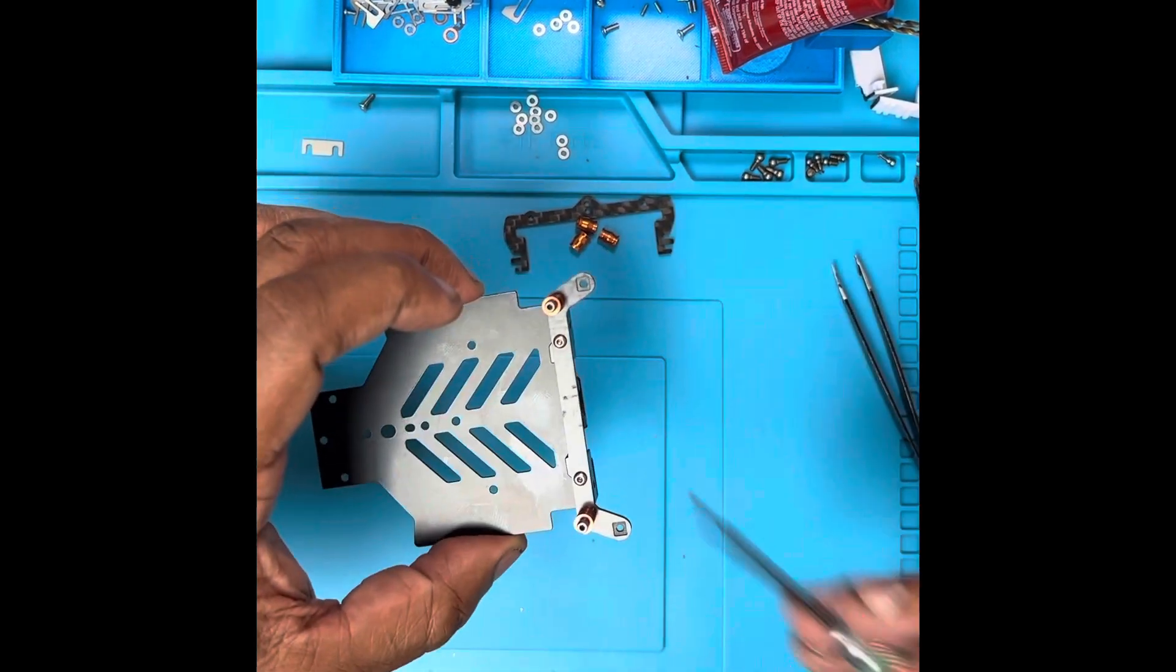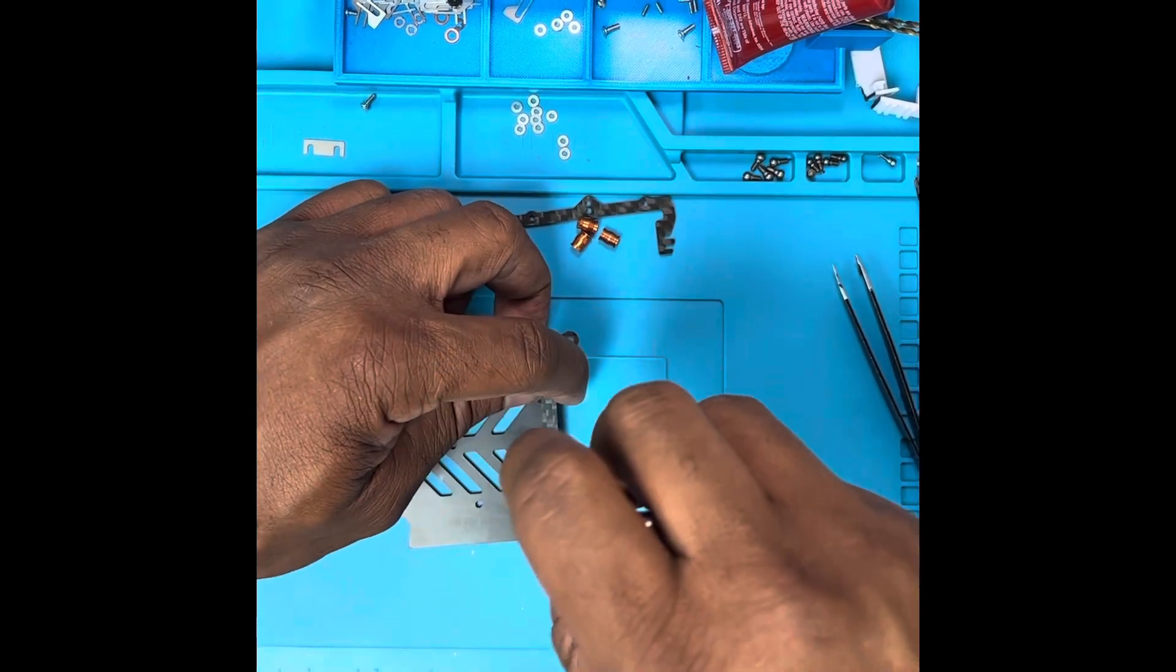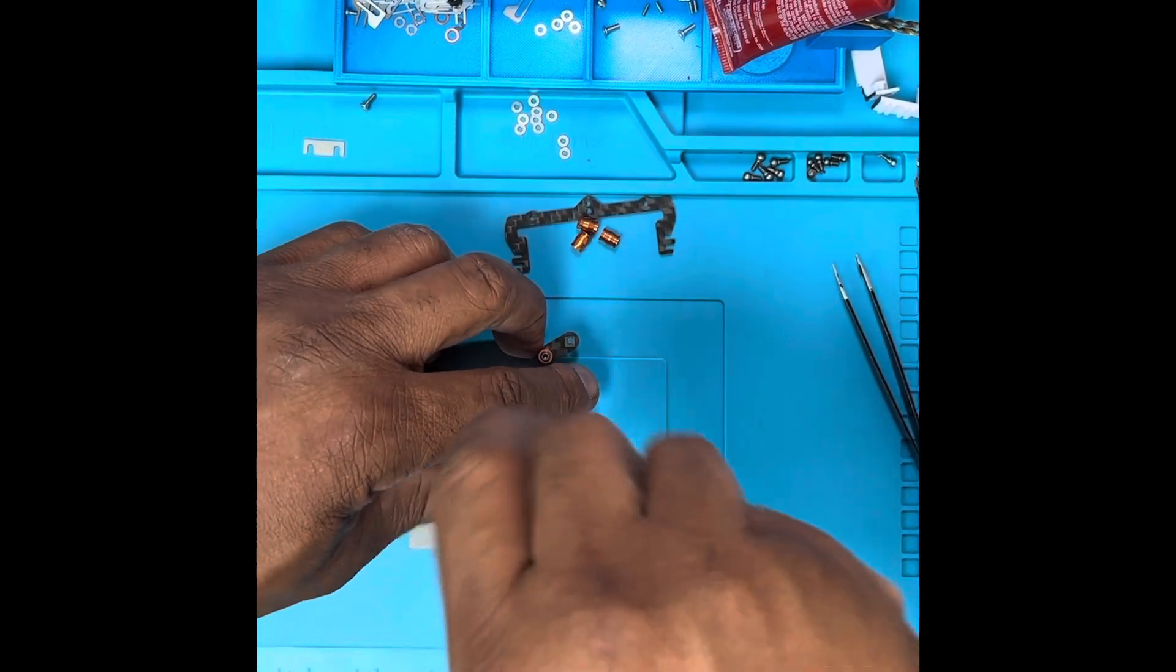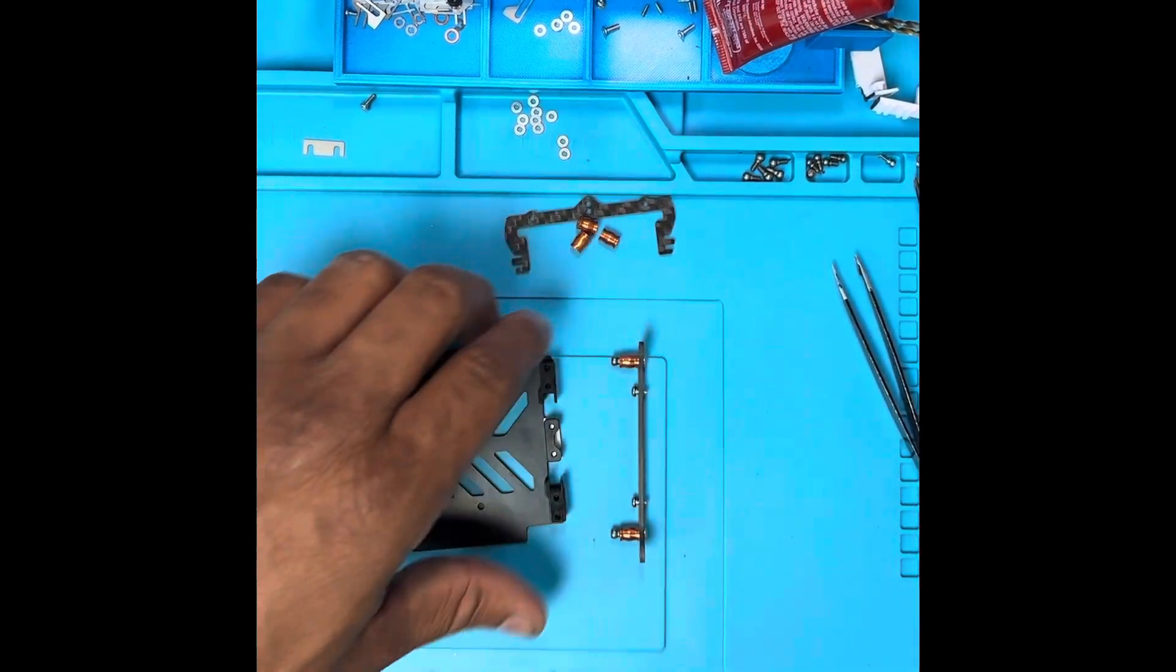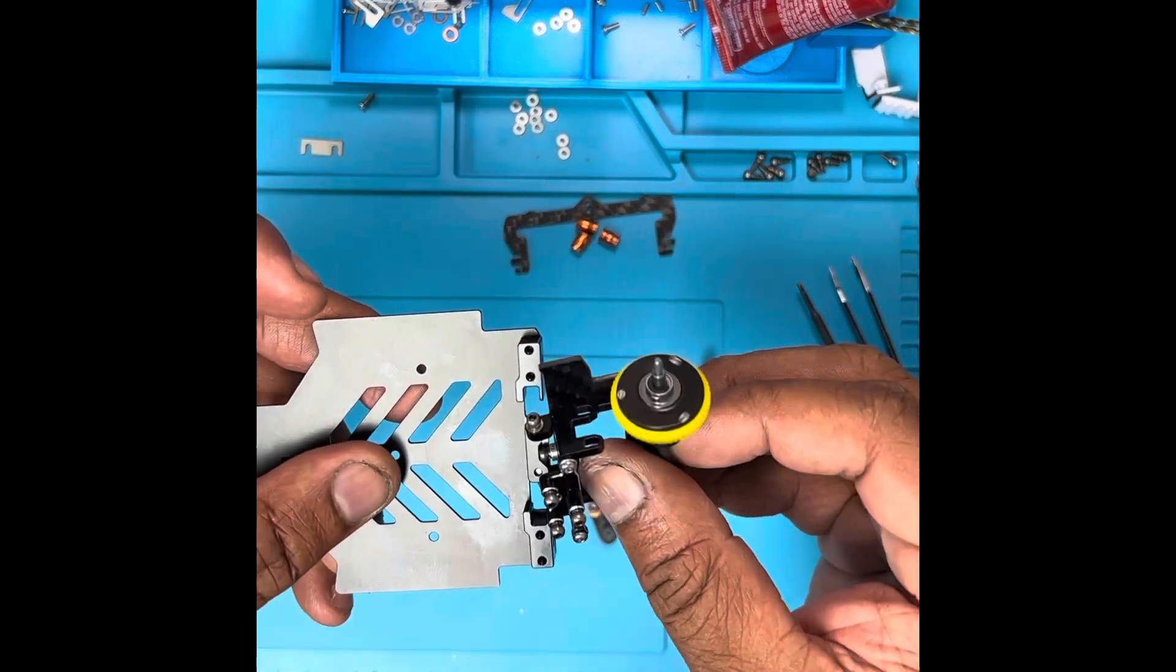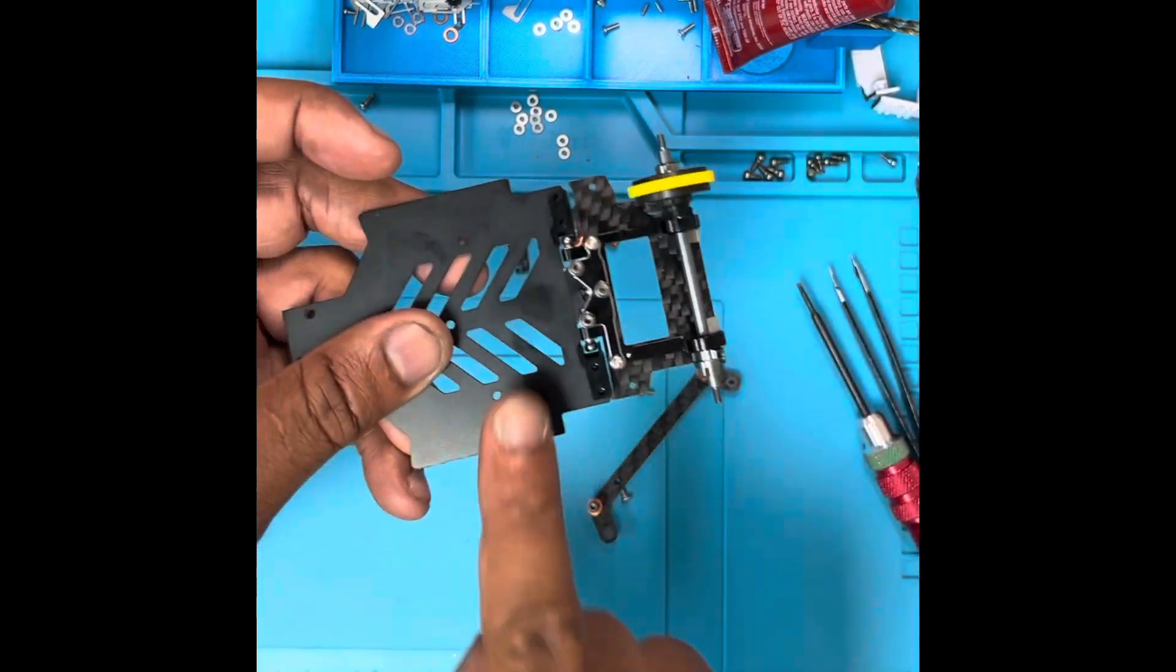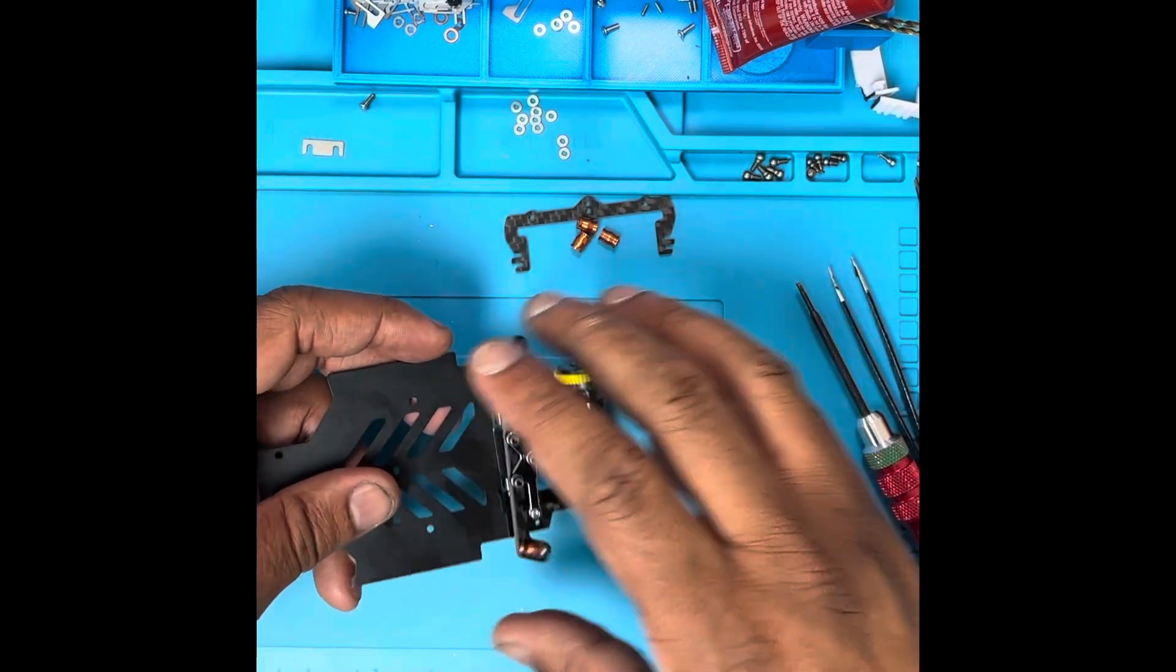Now, I'm going to take this back apart and go ahead and install the pod so you can see how it fits. Easiest way to do this is go sideways, in, and then snap like that. And it's going to be tight at first because your pod mount is tight for now. You'll adjust that in a few minutes.